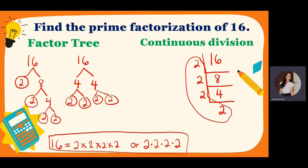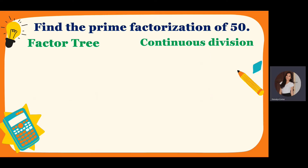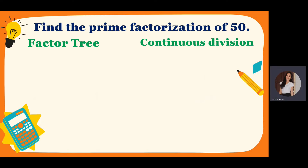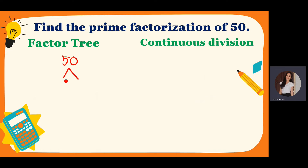I hope you were able to follow the example. If not, don't worry — we'll have another example. Let's do 50. For 50, there are other factors. We have 10 times 5, and there is 25 times 2. So whichever is easier for you to use, you can use that. For me, I will use 10 and 5 for 50, because it comes to my mind first and it's easier. So 5 — encircle it because it's already a prime number. Encircle the prime factor.